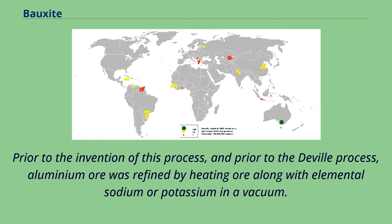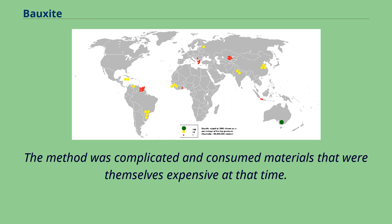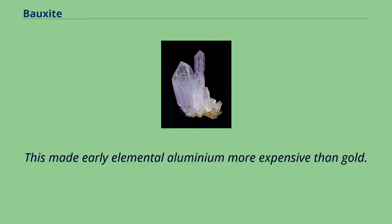Prior to the invention of this process, and prior to the DeVille process, aluminium ore was refined by heating ore along with elemental sodium or potassium in a vacuum. The method was complicated and consumed materials that were themselves expensive at that time, which made early elemental aluminium more expensive than gold.